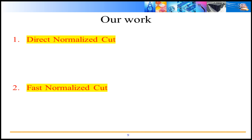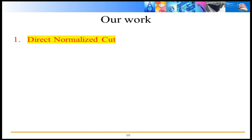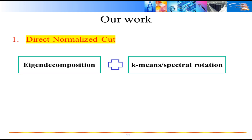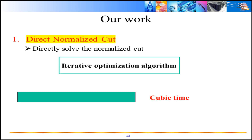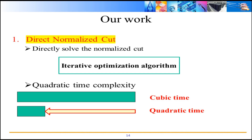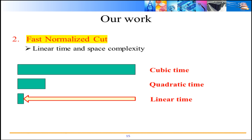In this work, we propose two novel normalized cut methods. The first one is DirectNormalizedCut (DNC). We propose an iterative method to directly solve normalized cut without any eigen-decomposition. Therefore, DNC has a quadratic time complexity, which is a significant reduction compared with the cubic one. To cope with large-scale data, we further reduce the quadratic complexity of DNC to linear time. The new method is called Fast Normalized Cut.